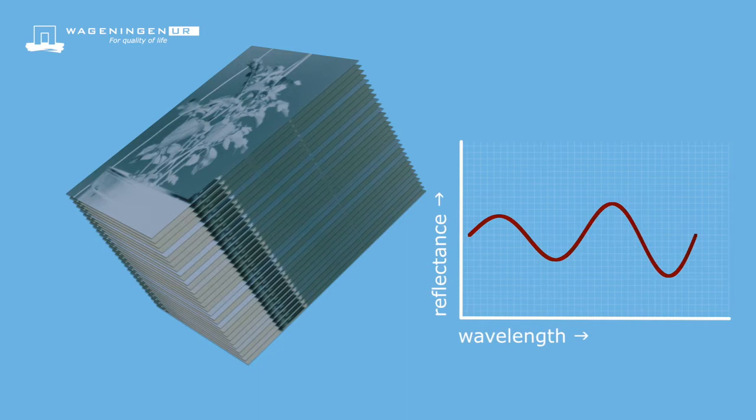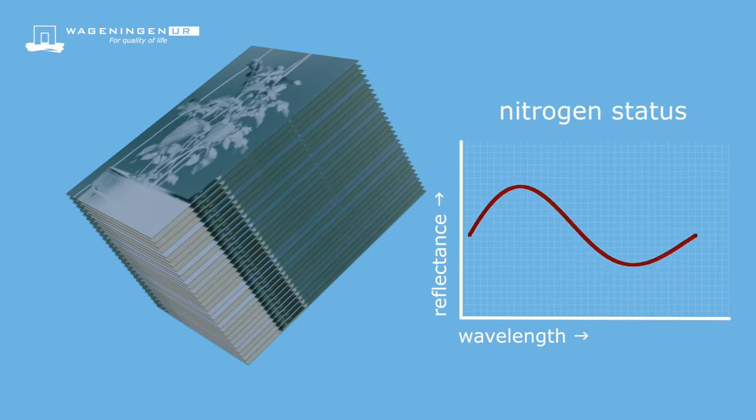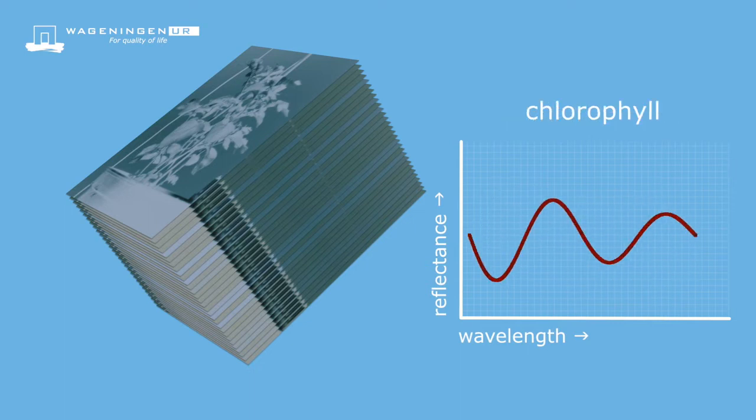Hyperspectral imaging allows for measuring plant features like dry matter content, nitrogen status, or the concentration of compounds like sugar, lycopene, or chlorophyll.